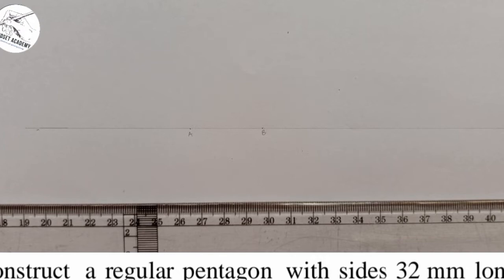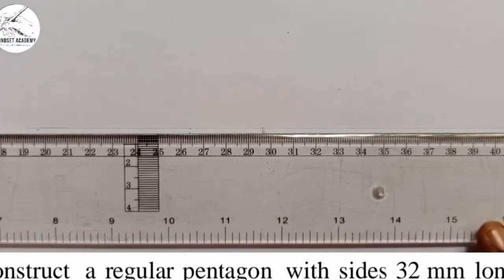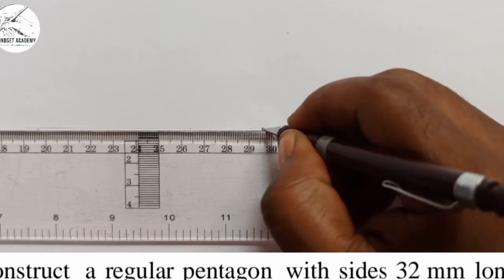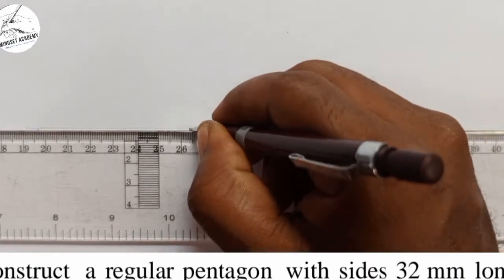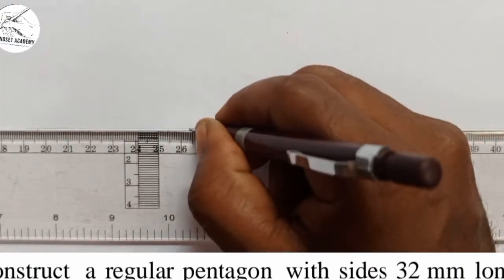So the next thing I am going to do is, I will take in those two points. From A to B, I am going to take in it. Because that will be one side of the pentagon.